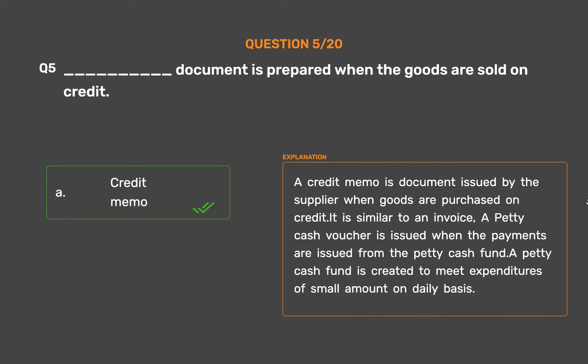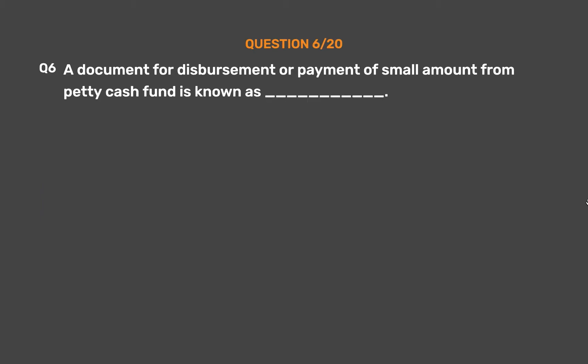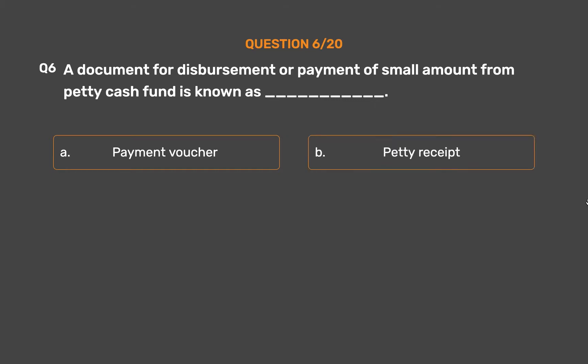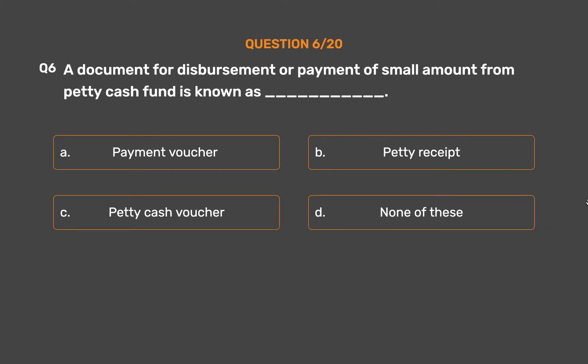Question number six: a document for disbursement or payment of small amounts from a petty cash fund is known as — Option A: payment voucher. Option B: petty receipt. Option C: petty cash voucher. Option D: none of these.